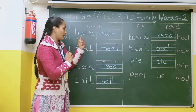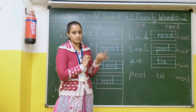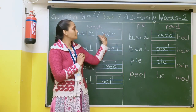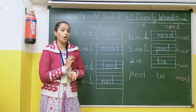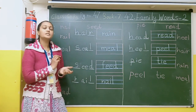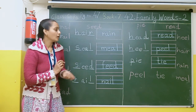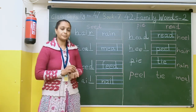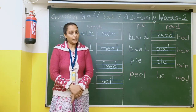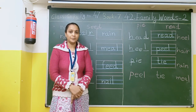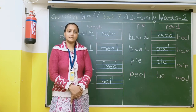Abhi aapke paas yahan ye doosre bhi boxes hain — yahan mein aap kisi spelling ko repeat karke vapas likh sakte ho. So you read these spellings and write properly. After that, you complete your book. And after that, you tell your mama to take a photo and send it to me. Thank you students and parents. Stay safe at home.